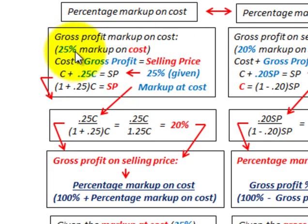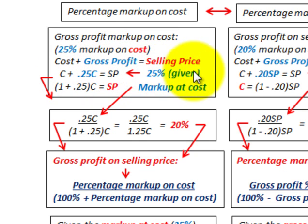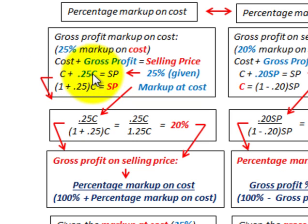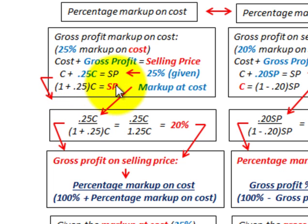Let's say we have a 25% markup on our cost. We use the general equation: cost plus gross profit equals selling price. Cost is represented as C. Our gross profit is 25% of our cost, so 0.25 times C. Separating out the cost element, that gives us 100% plus 25% times our cost equals our selling price.